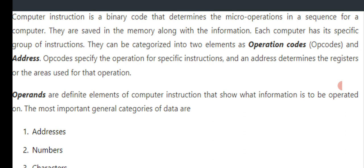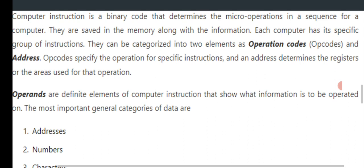They are saved in the memory along with the information. Each computer has its specific group of instructions. They can be categorized into two elements as operation code, that is opcode, and address. Opcodes specify the operation for specific instructions, and an address determines the registers or areas used for that operation.